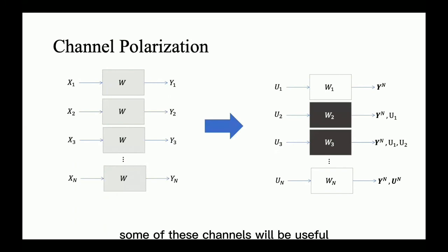in the sense that some of these channels will be useful with a capacity that is almost equal to 1 and should be used for transmission. And the remaining are useless channels with a capacity that is almost equal to 0 and should be discarded.